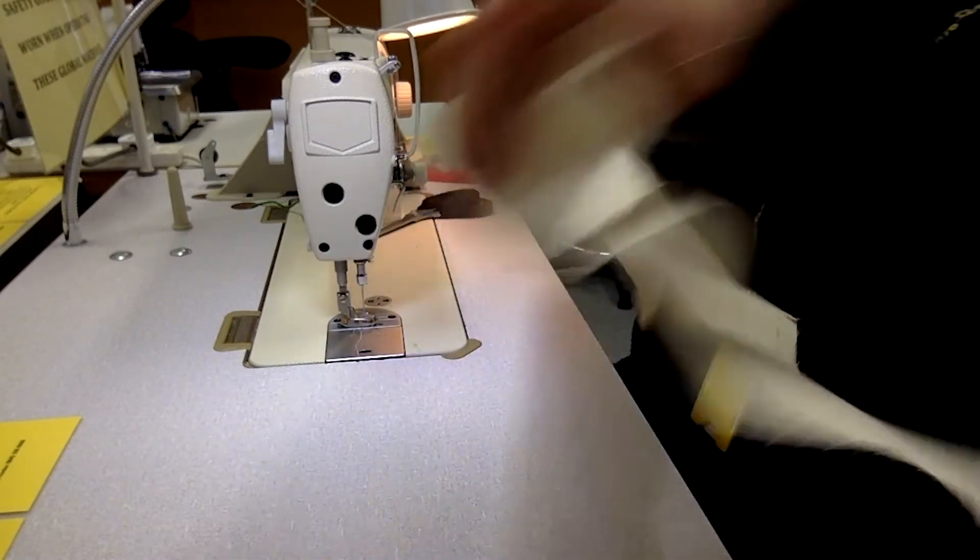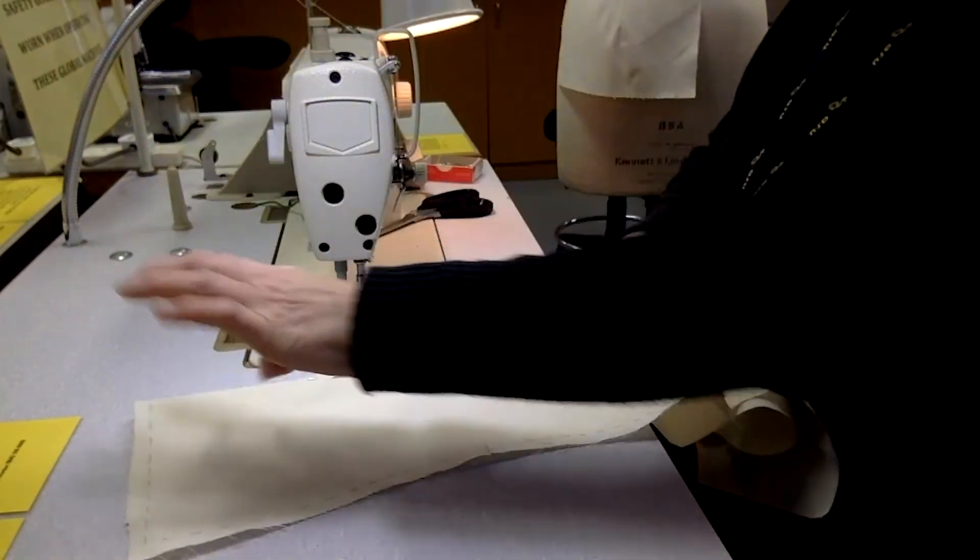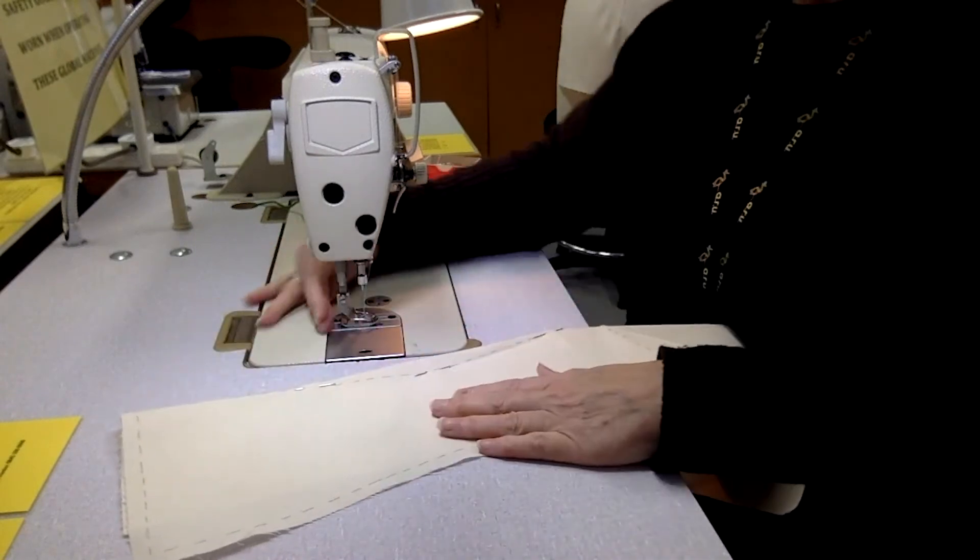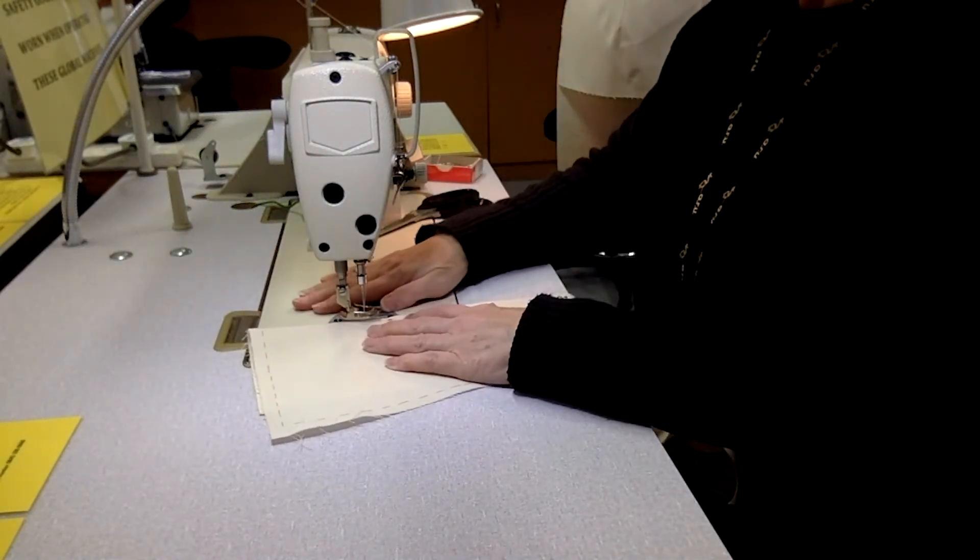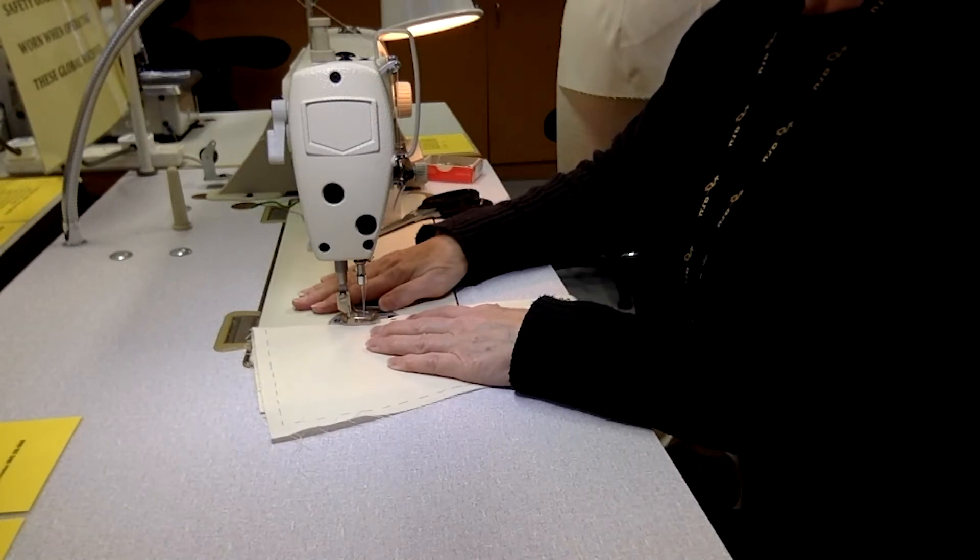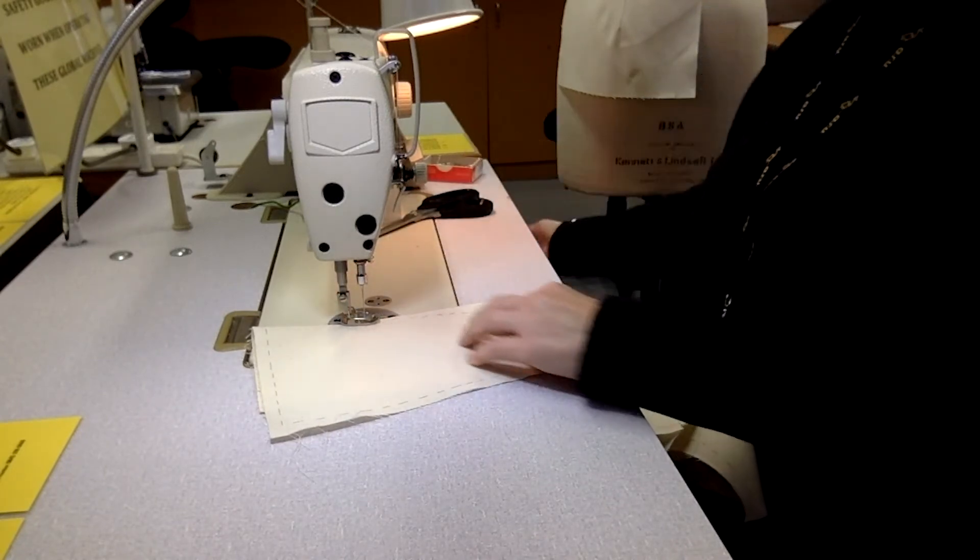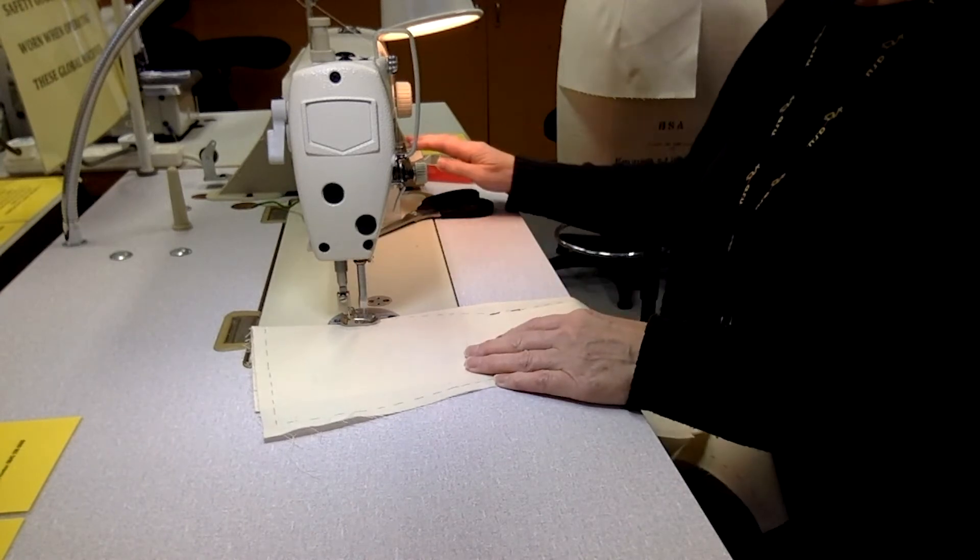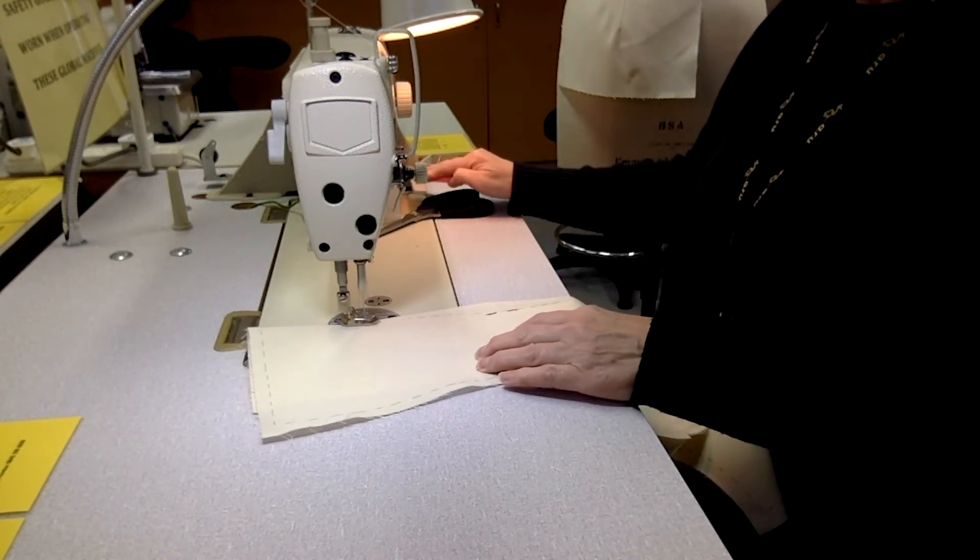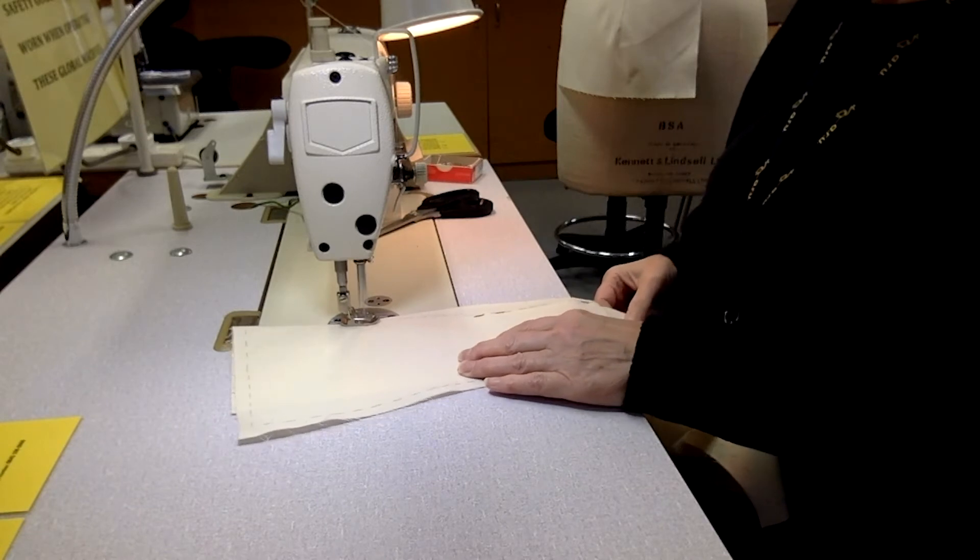Now we're going to sew the double dart. Again, I'm going to start at the beginning. Again, just a backwards and forwards stitch just to initially secure that.